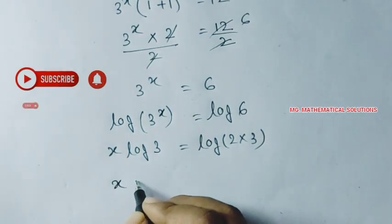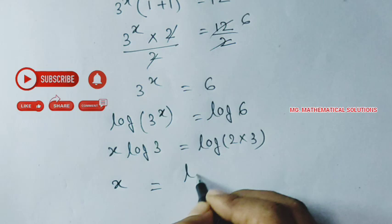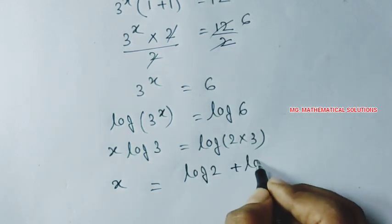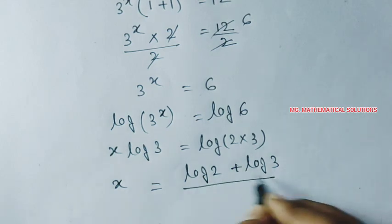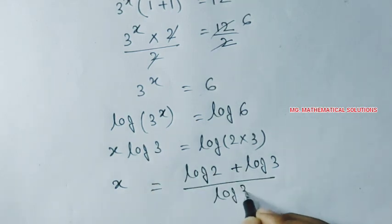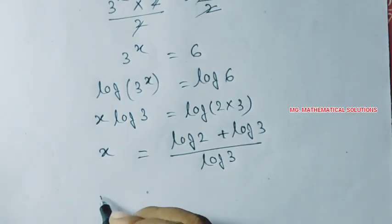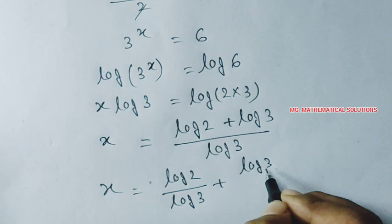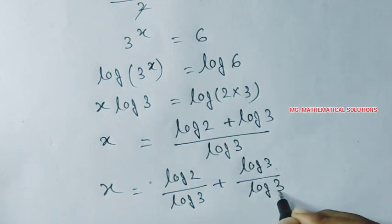So x equal to log of 2 times 3 means log of 2 plus log of 3 by log of 3. So x equal to log of 2 by log of 3 plus log of 3 by log of 3.